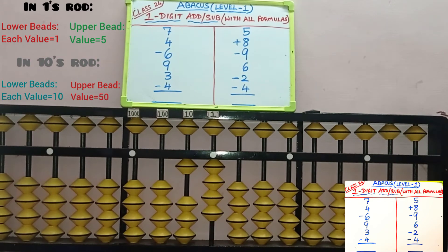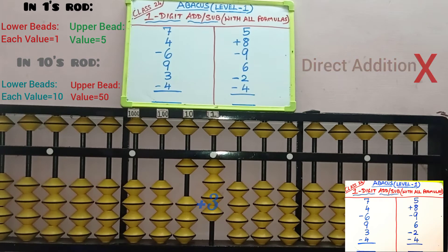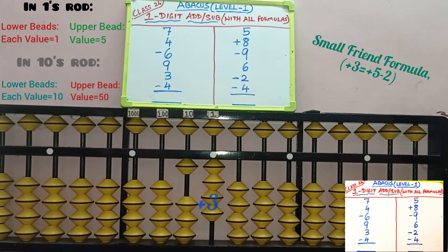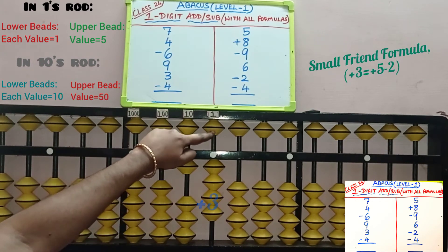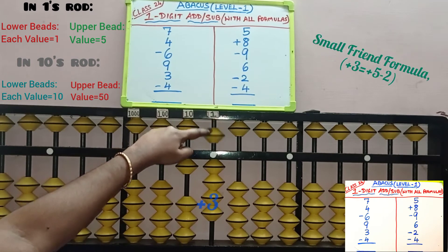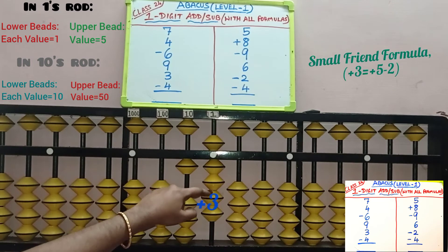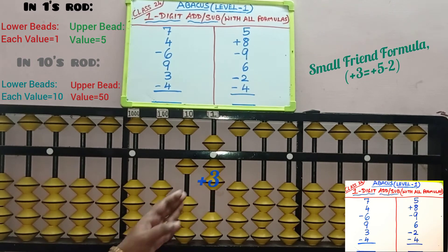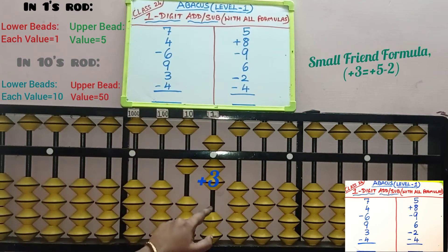Fifth row, plus 3 — we need to add 3 beads in the 1 slot. Only 5 beads are available, so direct addition is not possible. For 3, first check small friend — we need to check if upper beads are available to add. 5 beads are available, so do plus 5. 3's small friend is 2 because 3 plus 2 equals 5, so remove 2 beads. 3 is added in the 1 slot with the help of small friend: plus 5 minus 2.